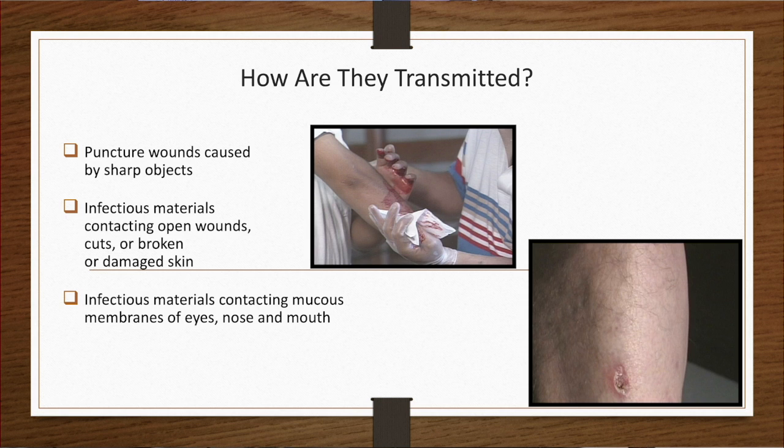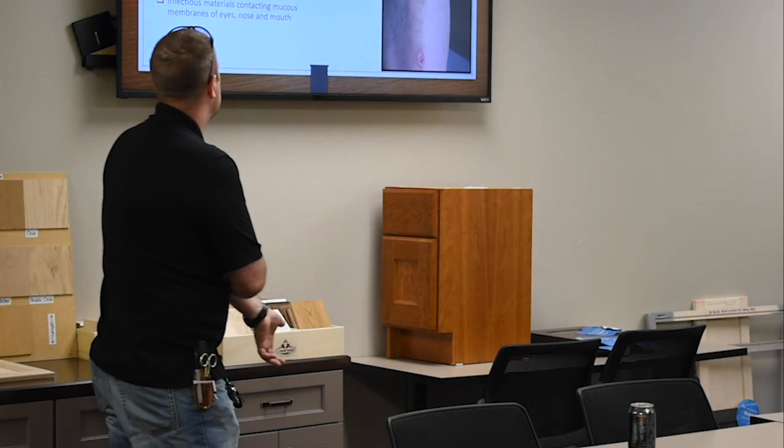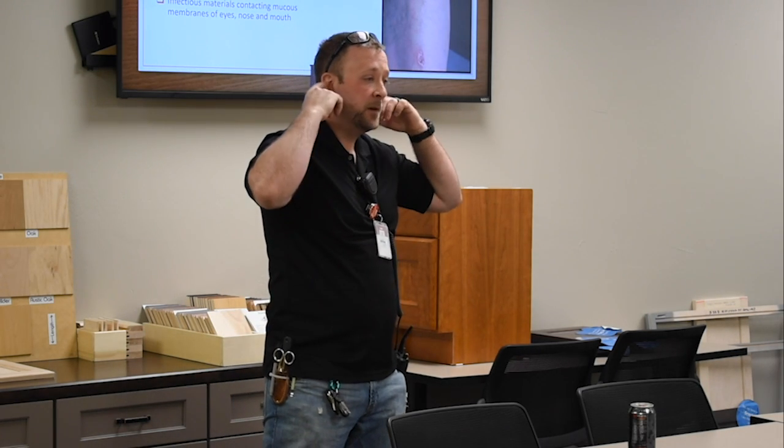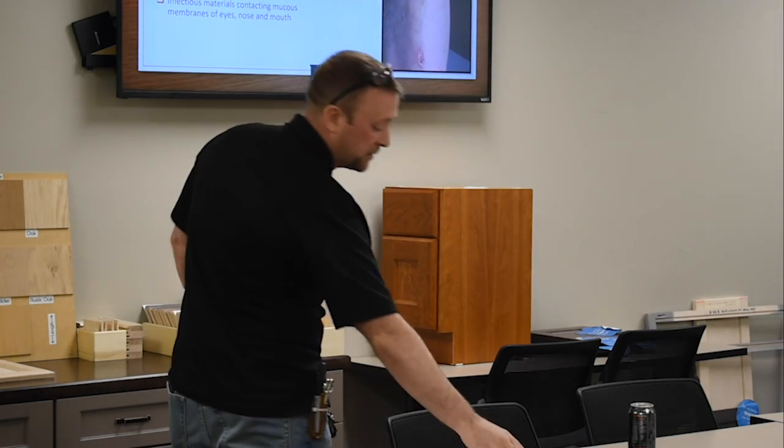How are they transmitted? Well, by puncture. You've got a piece of metal where somebody bled on it. That punctures into your skin like a needle. You're going to be in contact then. Contact with open wounds. So you've got an open cut on your hands. You're assisting somebody and you get brought in a body fluid. Broken, damaged skin. Infectious, excuse me, mucous membranes. It's eyes, mouth, ears, nose. Transmission. Points of transmission.